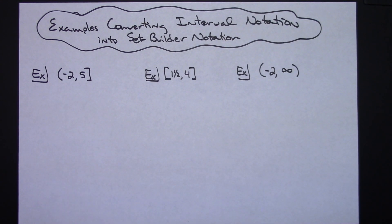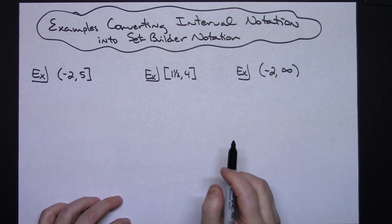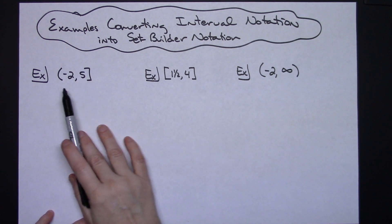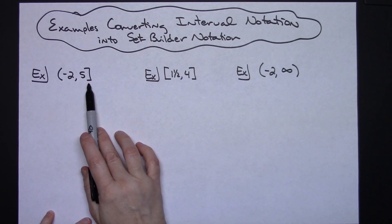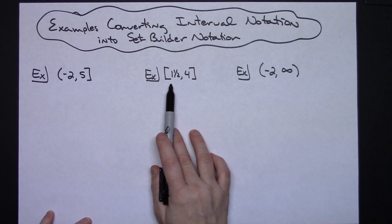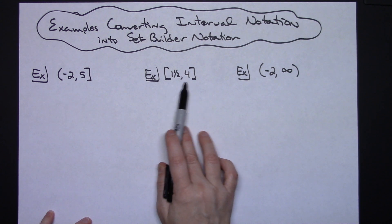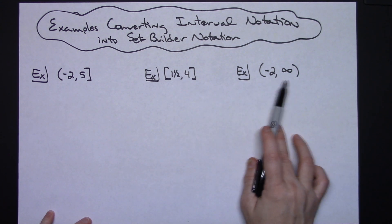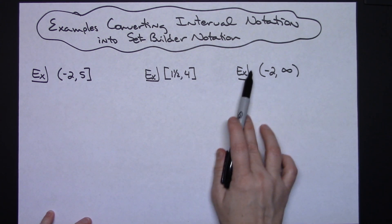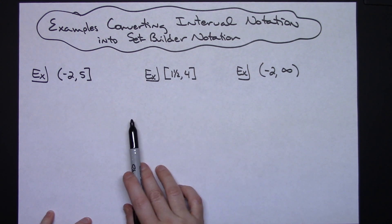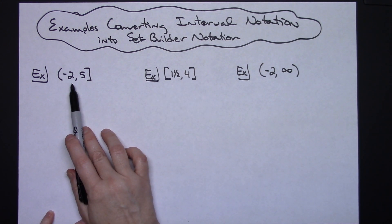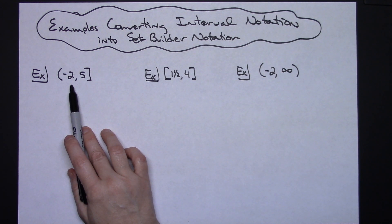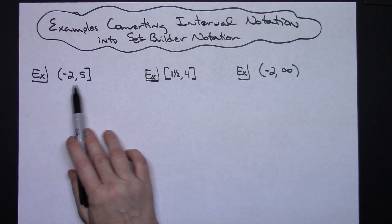In this video I'm going to work out three examples where I am converting interval notation into set builder notation. Interval notation has curvy brackets and square brackets. A closed interval uses square brackets, an open interval uses curvy brackets, and a half open or half closed interval has one of each.